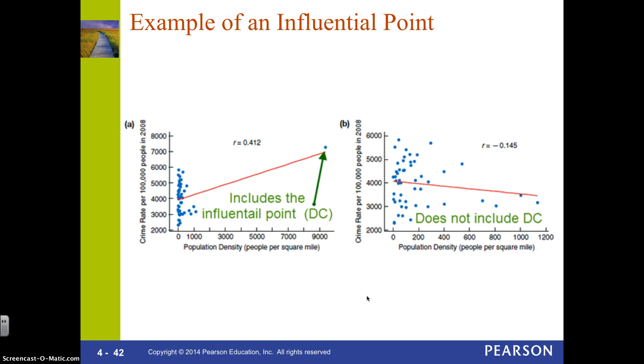So you notice that Washington D.C. is very dense, as in there's a lot of people that live there for the size that it is. So it comes way out here when you look at the population density. So this is definitely an outlier or an influential point.